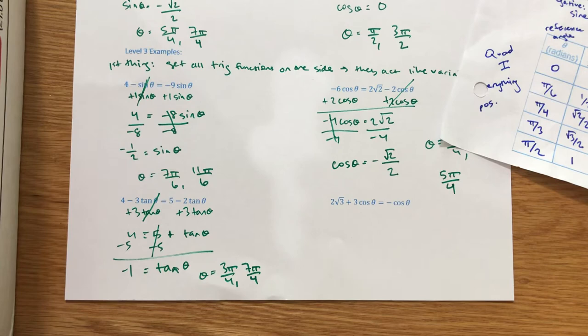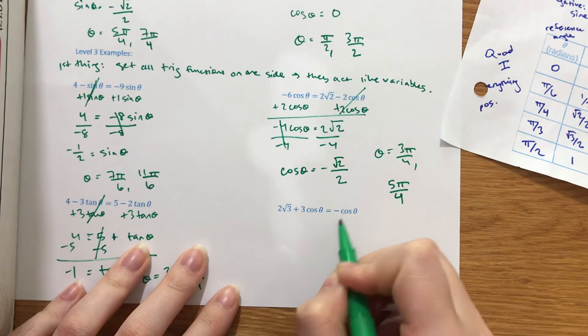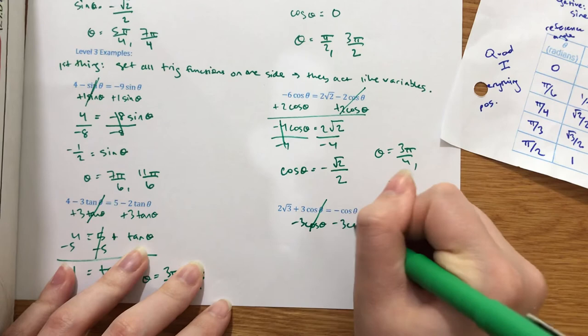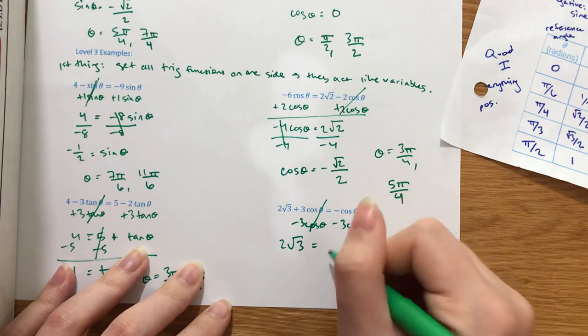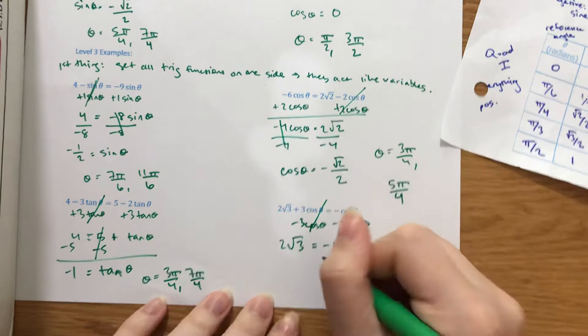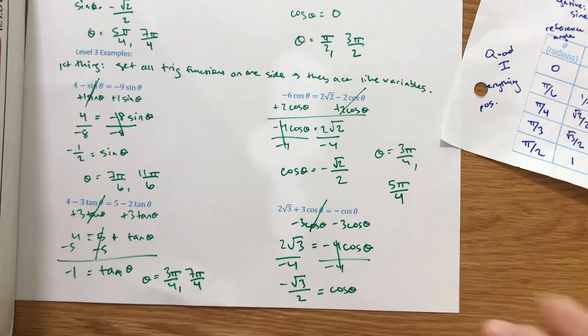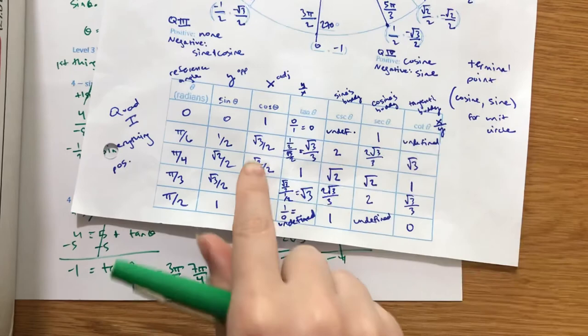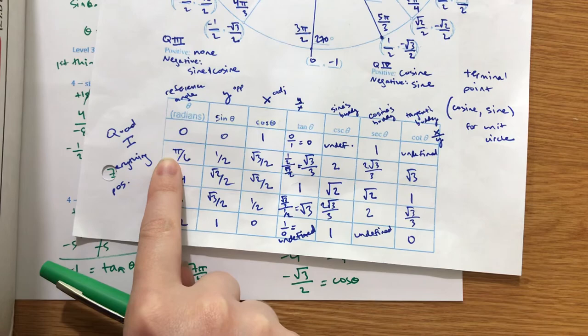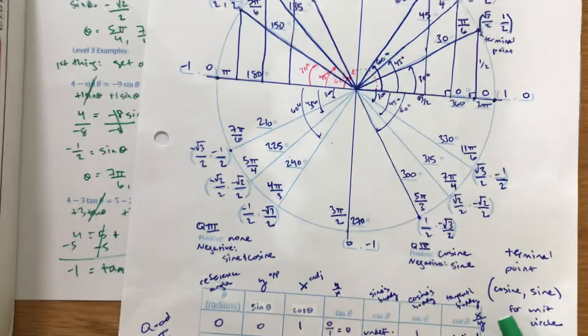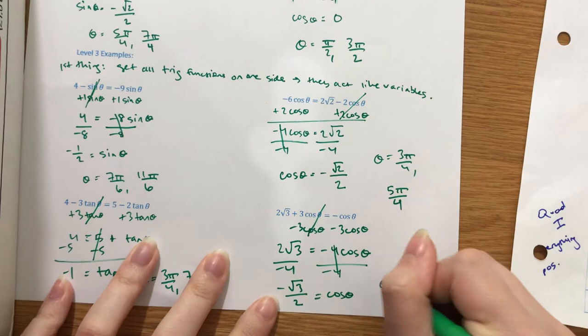Last example: we have 3 cosine theta and negative cosine. Subtract 3 cosine theta from both sides. What's left is 2 root 3 equals negative 1 minus 3, which is negative 4 cosine theta. Divide both sides by negative 4 — 2 fourths is one-half, so negative root 3 over 2 equals cosine theta. Cosine is root 3 over 2 at pi over 6 values, and cosine is negative in quadrants 2 and 3. The pi over 6 values from quadrants 2 and 3 are 5 pi over 6 and 7 pi over 6. Theta equals 5 pi over 6 and 7 pi over 6.